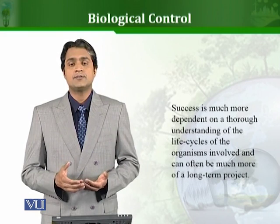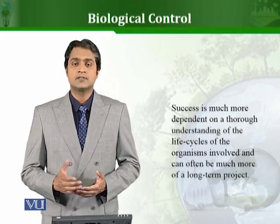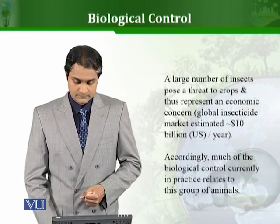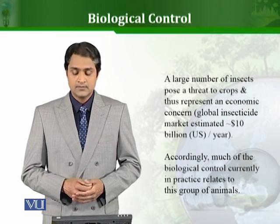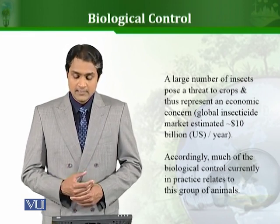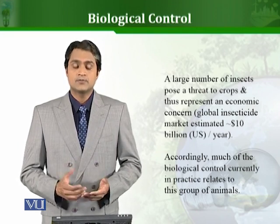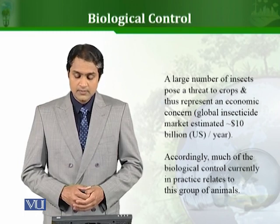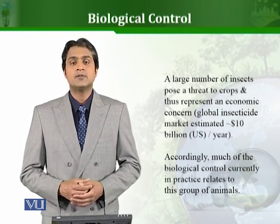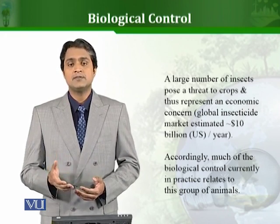As we said before, success is dependent on a thorough understanding of the life cycles of the organisms involved. Therefore, it can be a much longer, long-term project. When we use biological means to solve certain problems, it takes time. The most important example is using biological agents against insects that are harmful to certain crops. The global insecticide market is estimated to be around $10 billion per year — a huge market. Accordingly, much of the biological control currently in practice relates to this group of animals, since the market is so large. In the upcoming lessons, we will see more examples of how we can use different biological agents instead of physical and chemical means to solve certain problems.